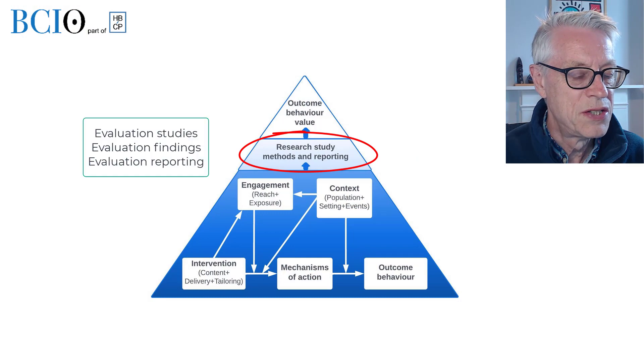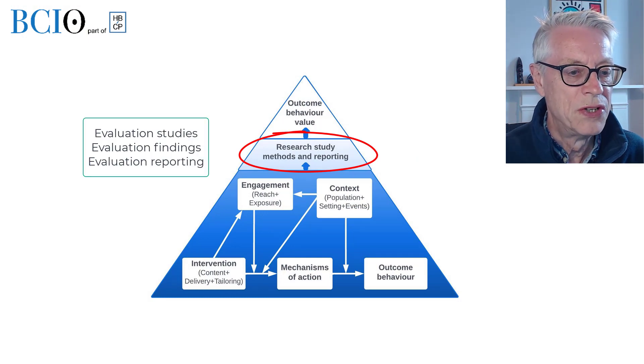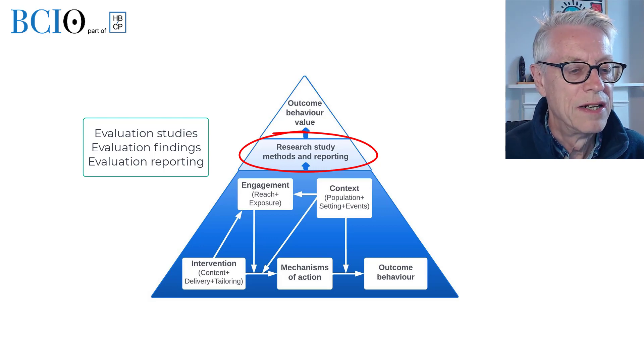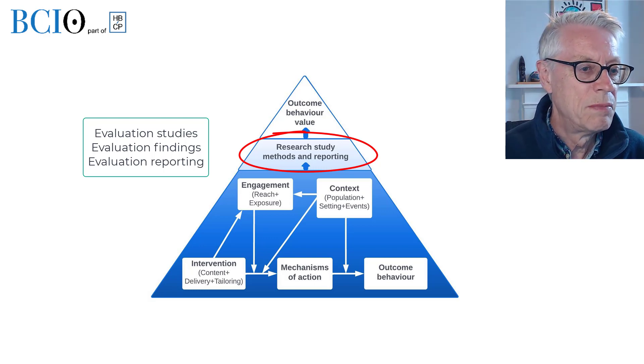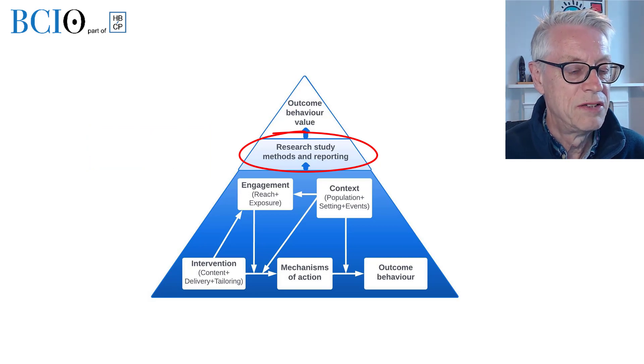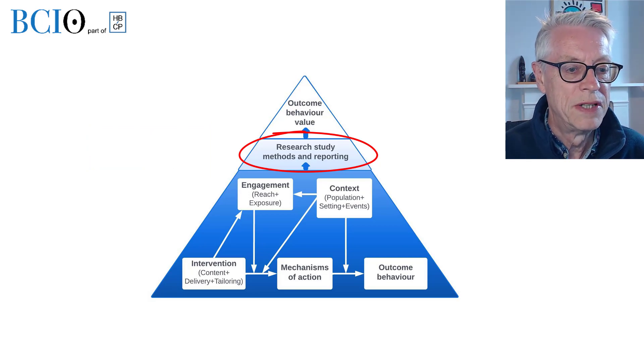The second part of the scope of the BCIO is around the evaluation. The BCIO aims to cover evaluation studies with all their components: the methodology, the measures, and so on, the evaluation findings, and the evaluation reports — the information that's reported in study reports about evaluations.